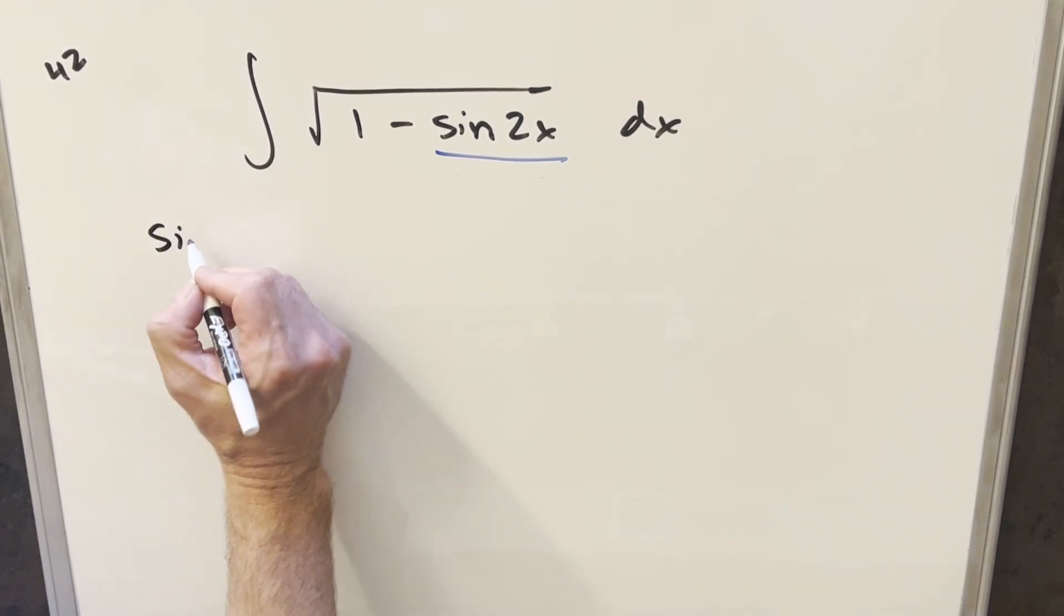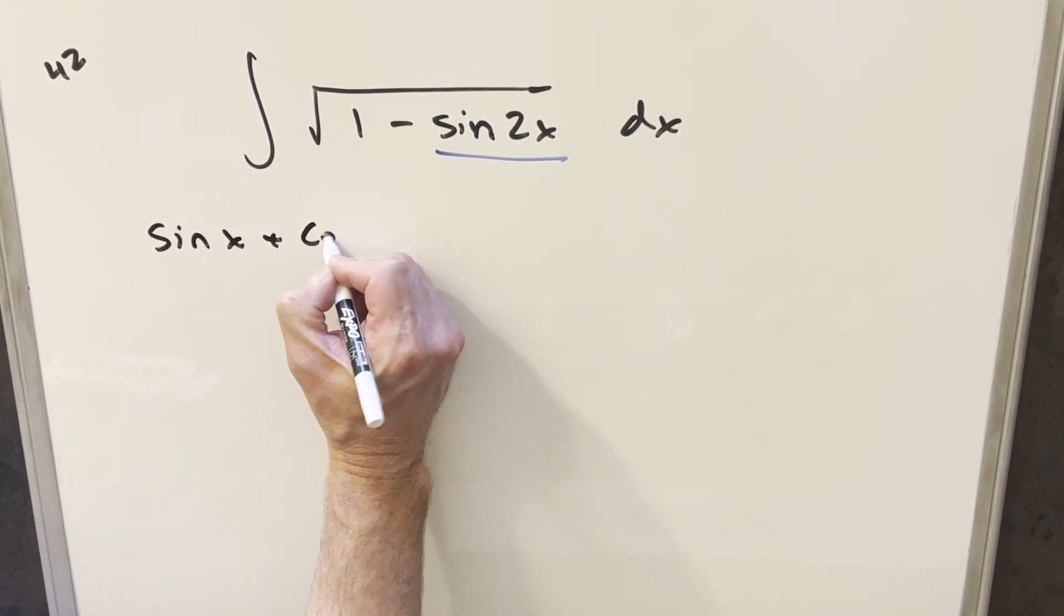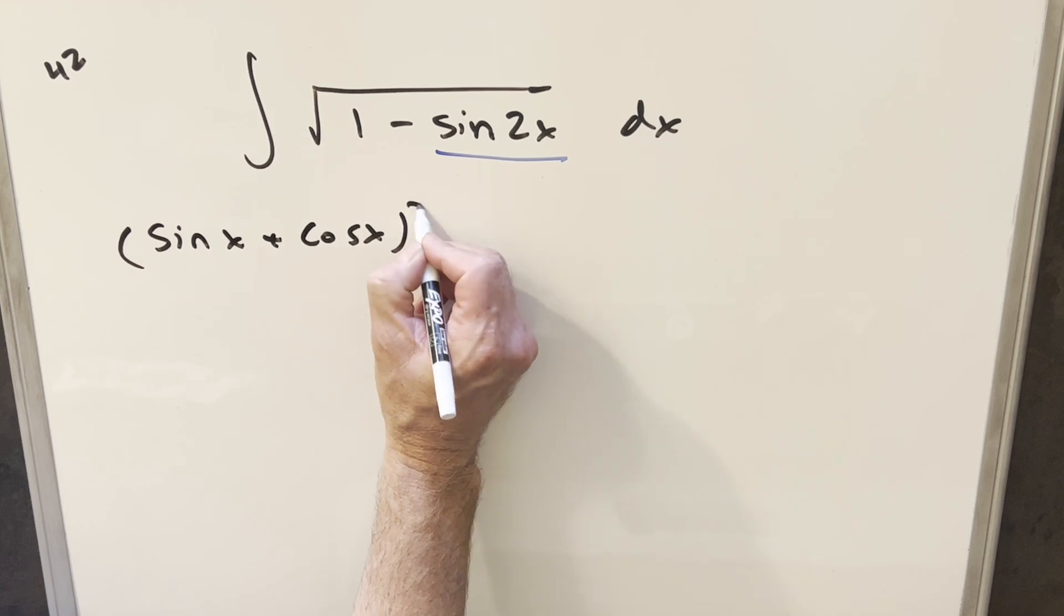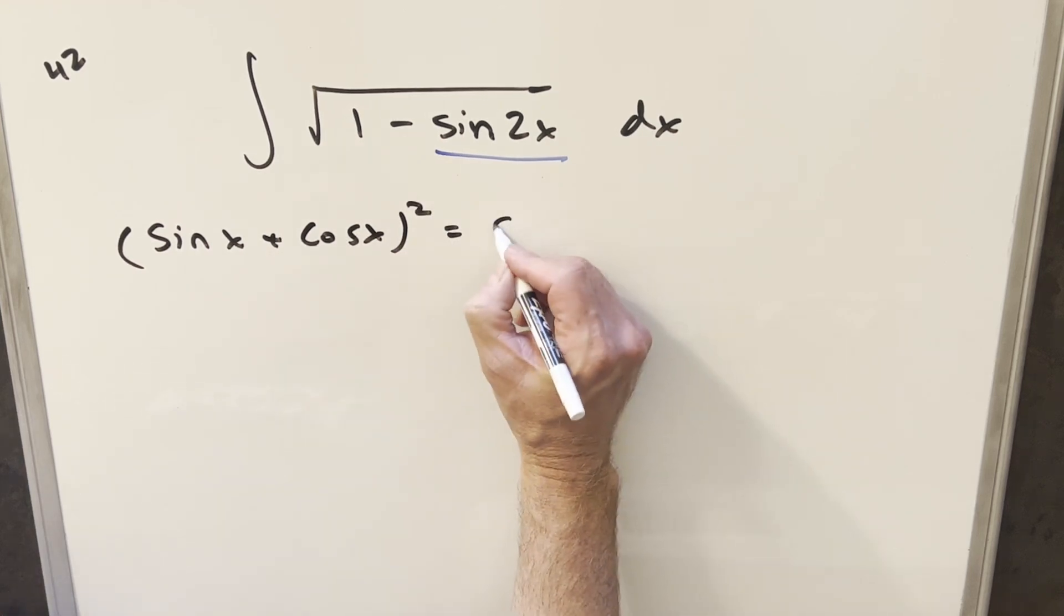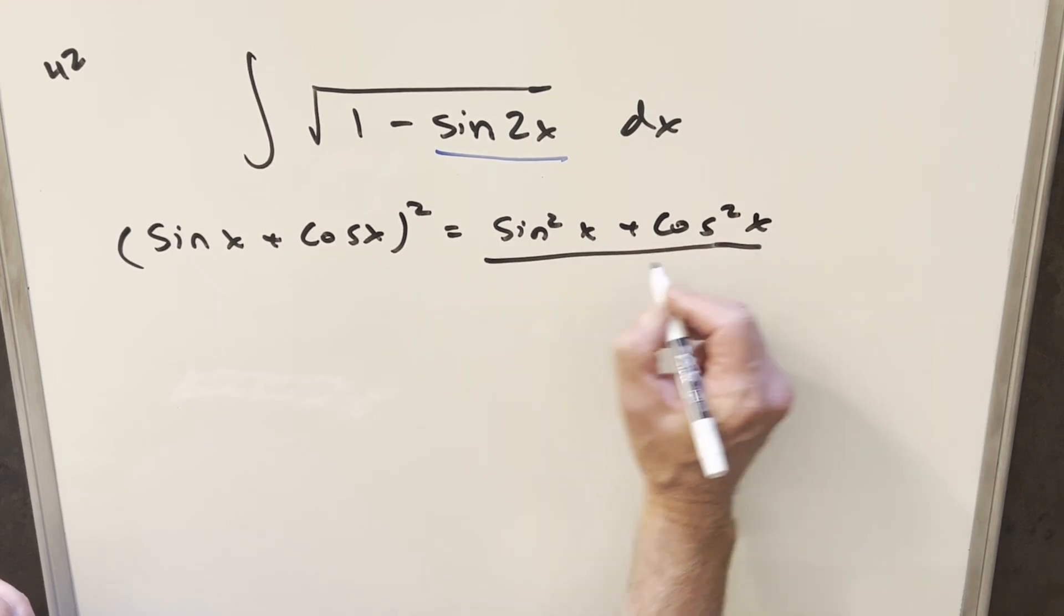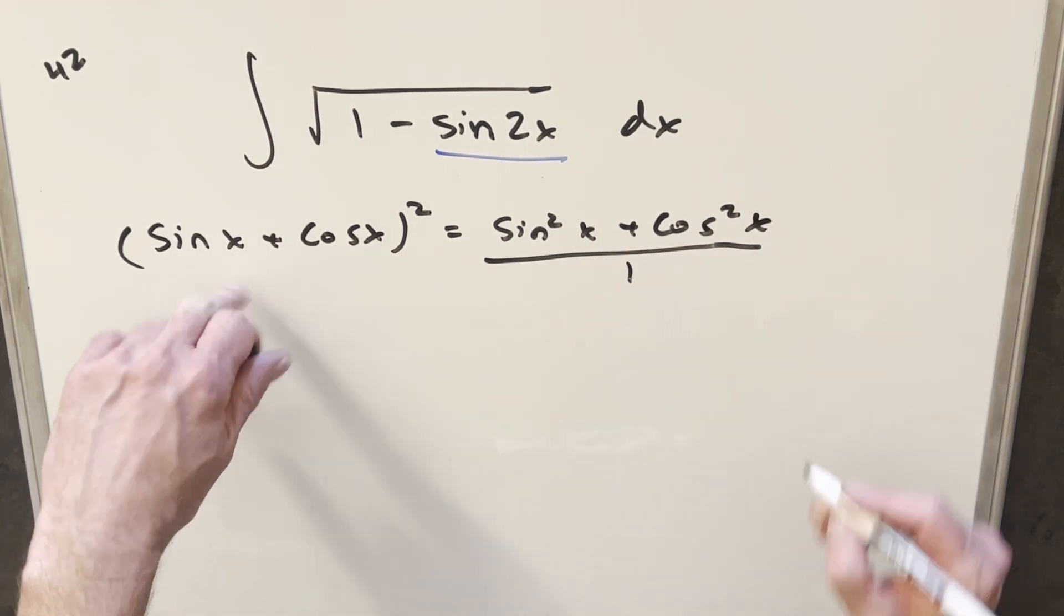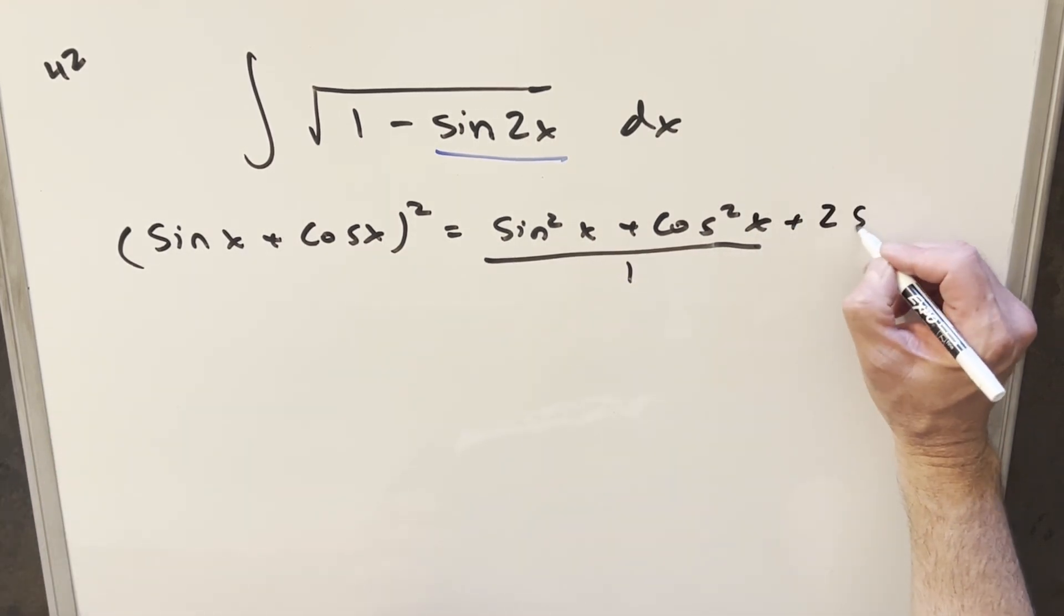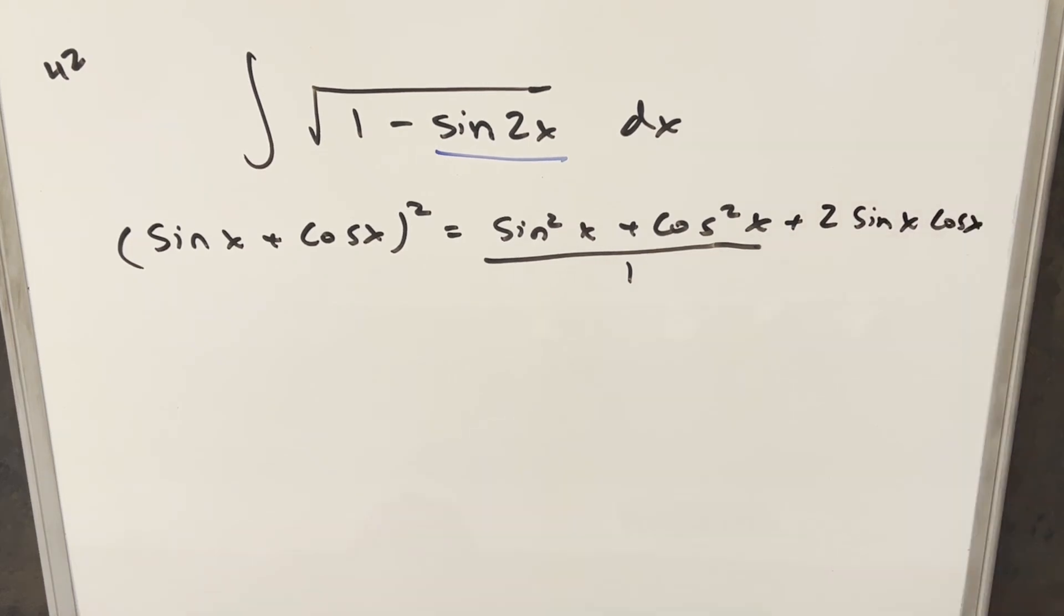One thing we can notice is when you have sine x plus cosine x and you square this whole thing and multiply it out, you're going to get sine squared x plus cosine squared x, but that part's just 1. And then multiplying out the middle terms, you end up with 2 sine x cos x. But this is just the double angle formula for sine, so we can simplify this down to just 1 plus sine 2x.